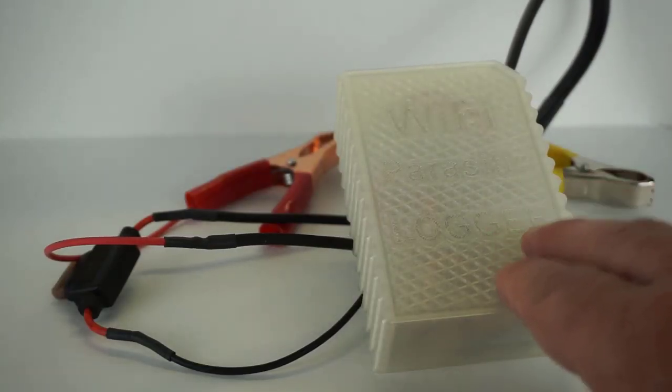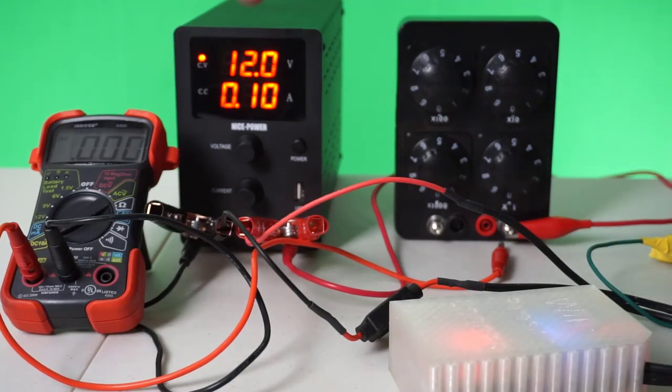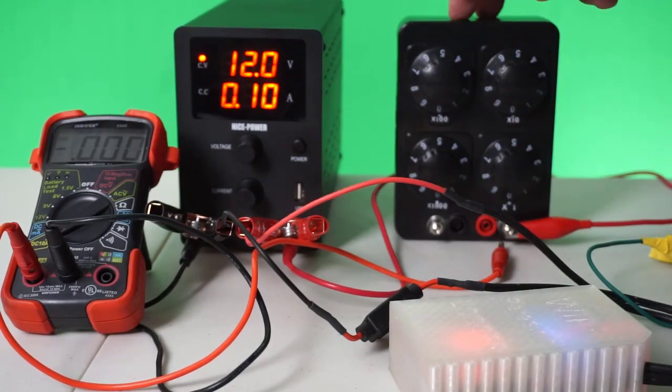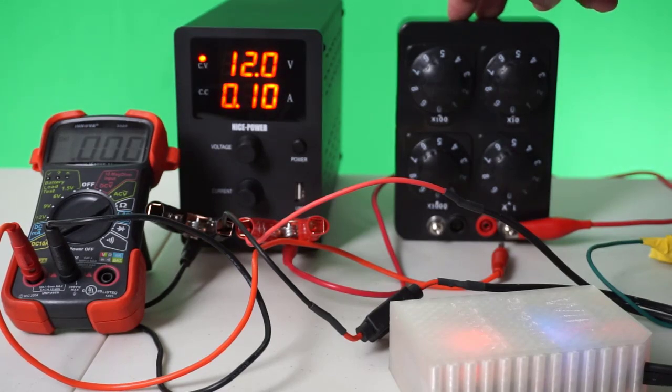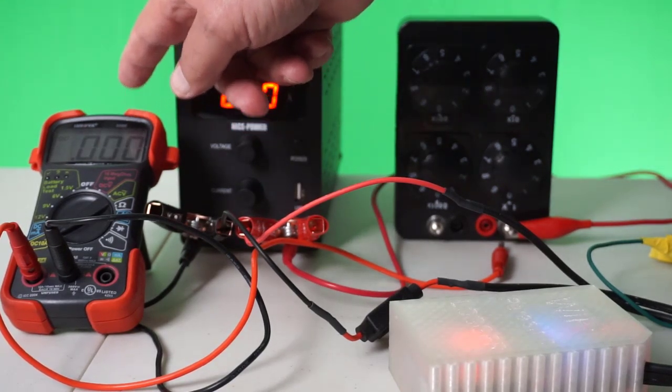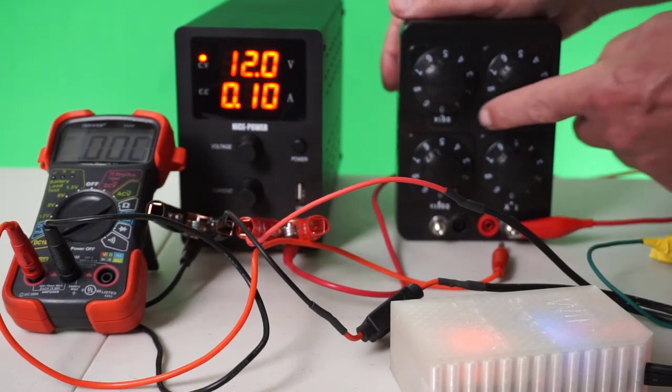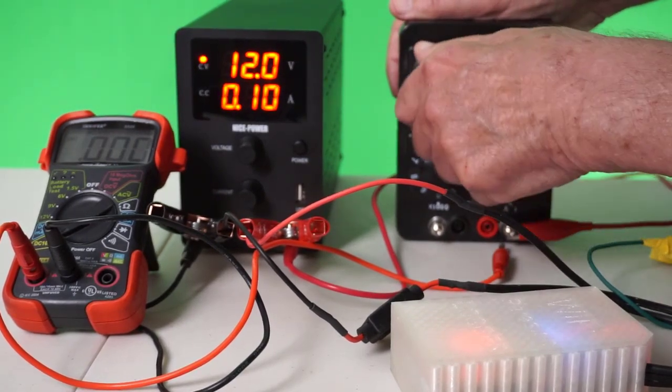And next, I'd like to demonstrate the accuracy of the Wi-Fi parasitic logger. I set up a small bench test here where this decade box is going to simulate a parasitic draw. It'll be read by the amp meter. Let's start with 100 ohms.